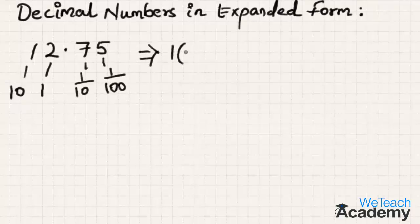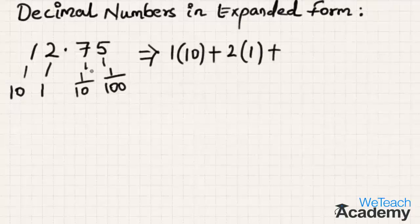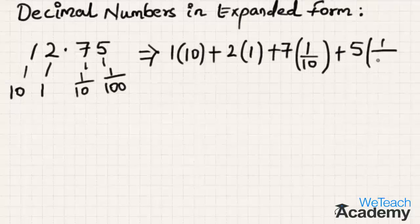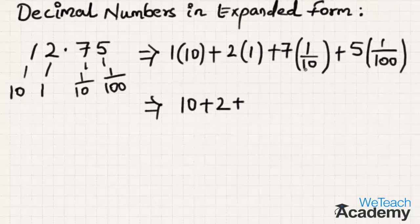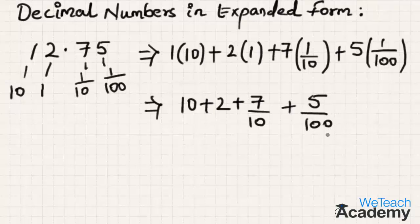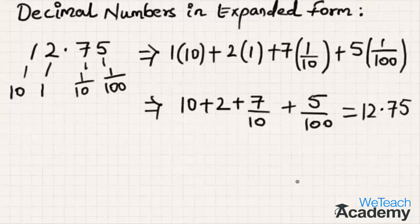Now let us expand. 1 is in tens place, written as 1 into 10. 2 is in ones place, written as 2 into 1. Plus 7 in the tenths place written as 7 into 1 by 10, plus 5 in the hundredths place written as 5 into 1 by 100. This gives us 10 plus 2 plus 7 by 10 plus 5 by 100. Hence the expanded form for 12.75 is 10 plus 2 plus 7 by 10 plus 5 by 100.